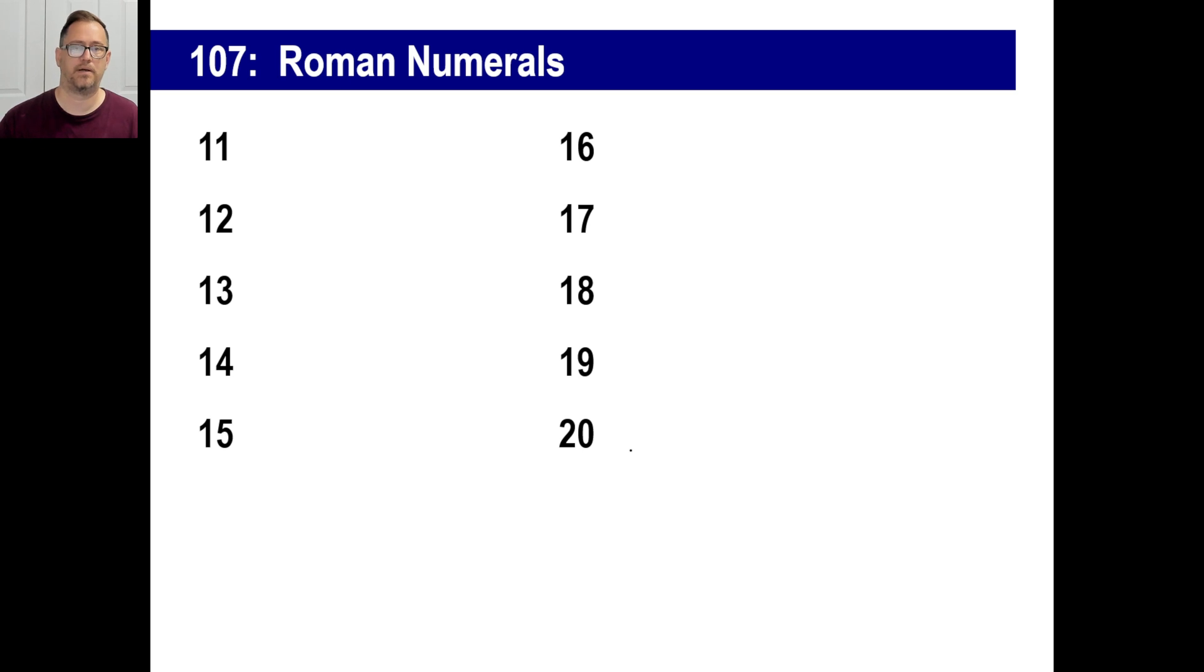Buckle your seatbelt here. Eleven is ten plus one. Twelve is ten plus two. Thirteen is ten plus three. Fourteen, that's my ten. Now I can't put four of those in a row. So I'm going to put a ten and then I'm going to put a four next, which is one taken from five. So X I V. Fifteen will be ten plus five. Sixteen is ten plus five plus one. Seventeen is ten plus five plus two. Nineteen: there is nothing for twenty, so we can write a ten. Then we need a nine. Well, that's going to be a ten there and then minus one. Twenty is just two X's.